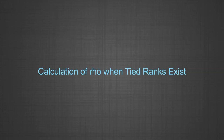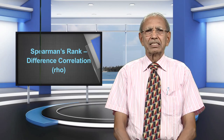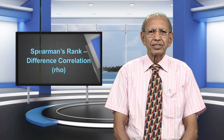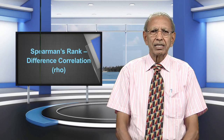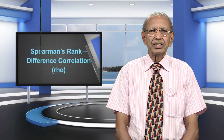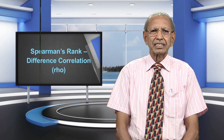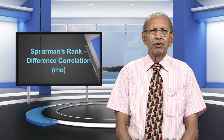We now take up another aspect: tied ranks, covered in section 1.2. Sometimes two or more persons obtain the same score, or have the same age, years of service, or some other numerical value. This introduces ties in the scores, which are then reflected in their ranks. The procedure of assigning ranks in such situations will be described with reference to the example solved in Table 2.